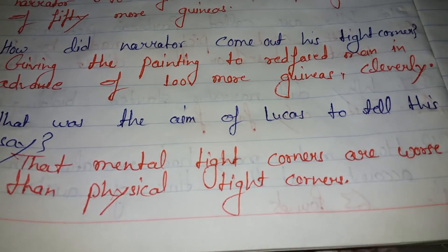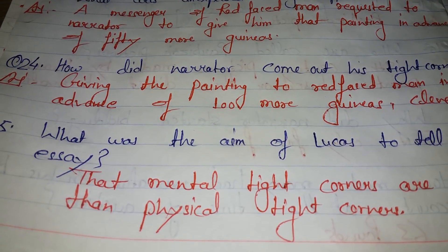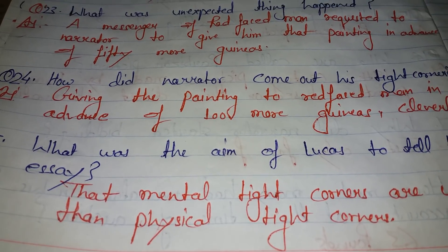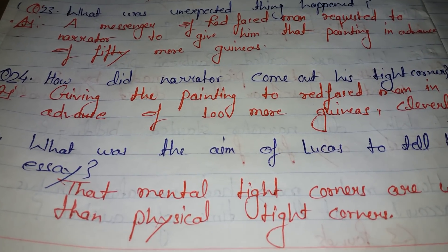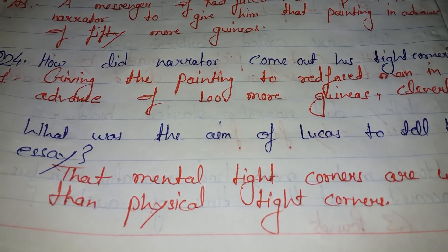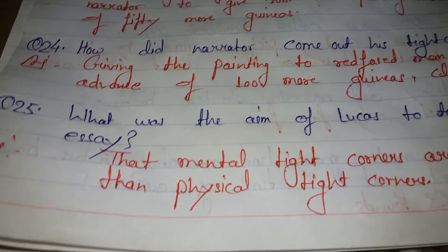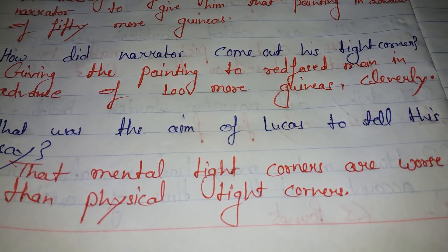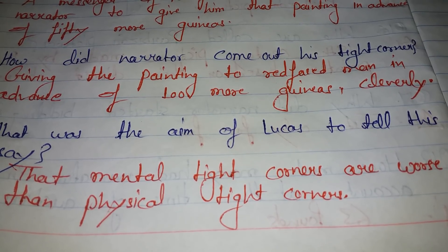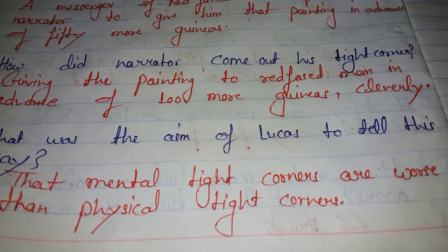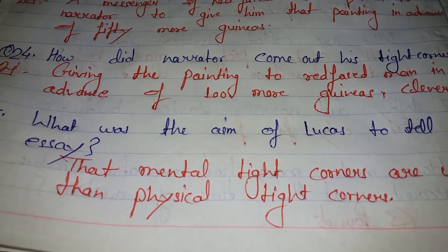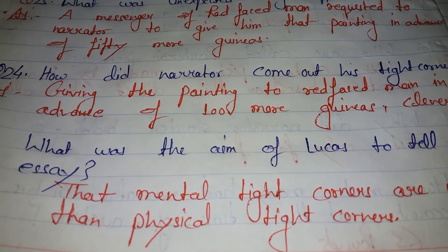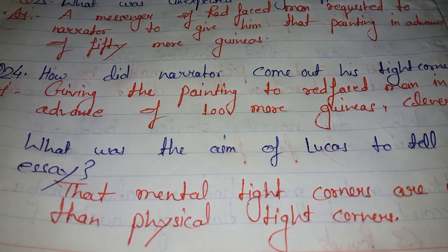What was the aim of Lucas in writing this essay? The aim was to show that mental tight corners are worse than physical tight corners. Mental tension and mental pressure are worse than physical difficulty.